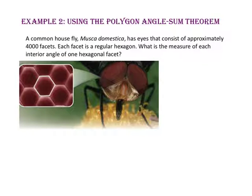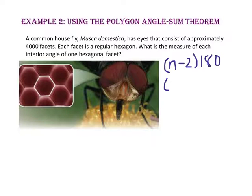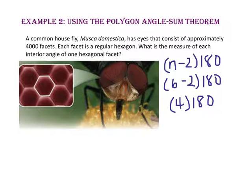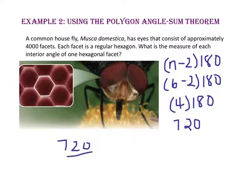In example 2, we will use the polygon angle sum theorem. A common house fly, Musca domestica, has eyes that consist of approximately 4,000 facets, and each facet is a regular hexagon. What is the measure of each interior angle of one hexagonal facet? Using the formula, since the hexagon has 6 sides, we get 6 minus 2 times 180, which is 4 times 180, equaling 720. Since each interior angle of a regular hexagon is congruent, we divide 720 by 6 to get 120 degrees for each interior angle.